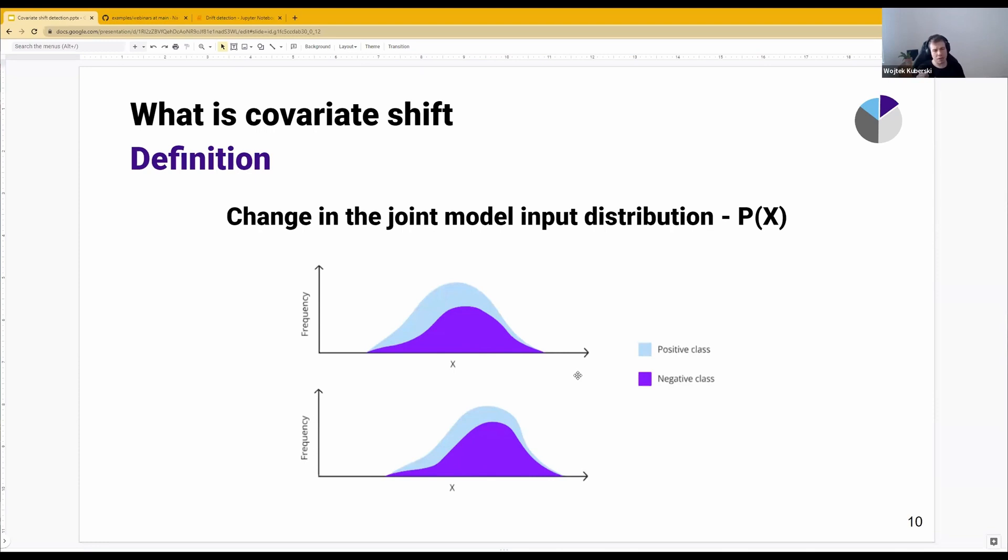That also might potentially impact the performance of the model. It will move from regions when the model is supposed to perform well, because maybe it's very easy to separate classes, to regions when the model is not going to perform so well, maybe because it's hard to separate the classes, or because it did not have enough data to learn the correct pattern. Of course, the same applies to regression problems, but it's easier to talk about and visualize binary classification problems, so let's stick with that.